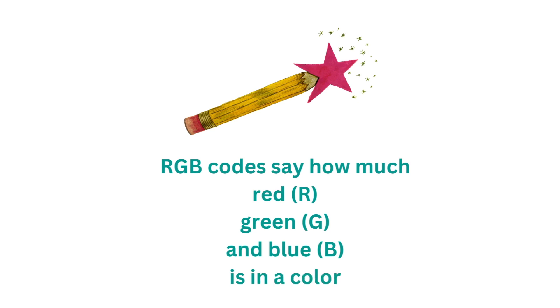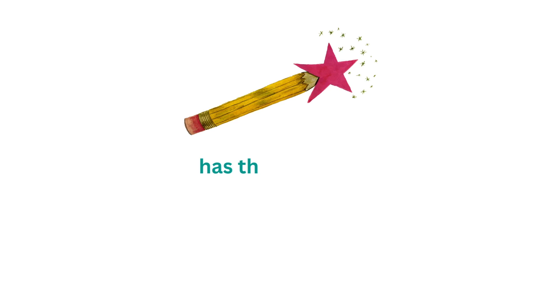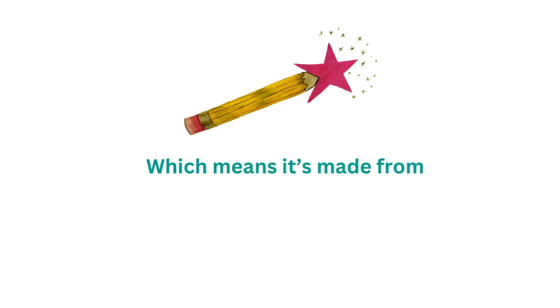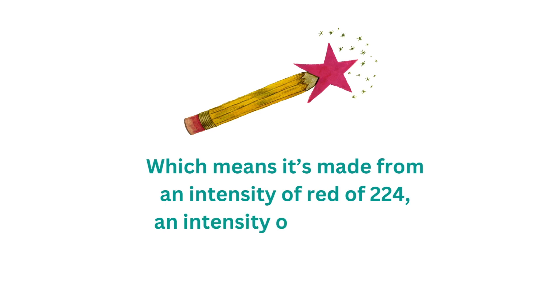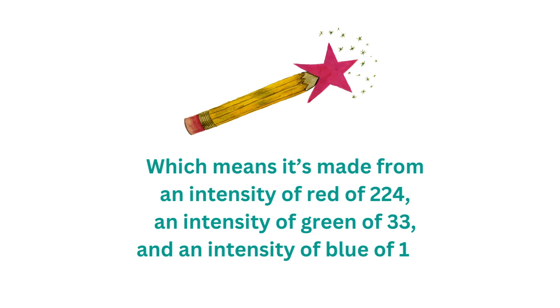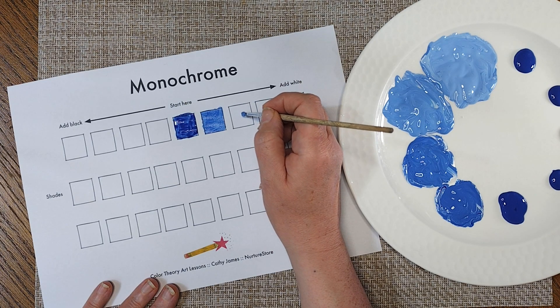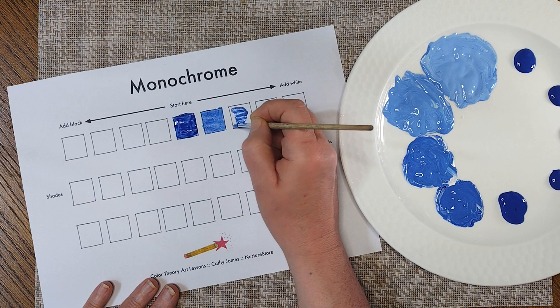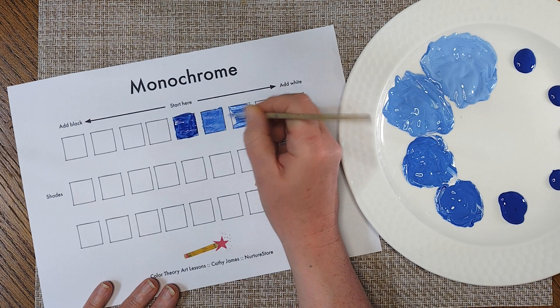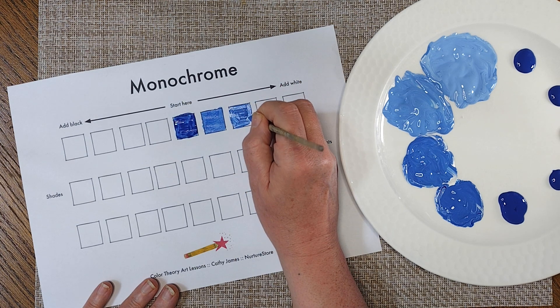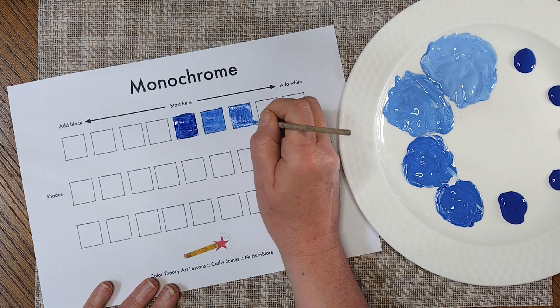RGB codes tell you how much red (the R), how much green (the G), and how much blue (the B) is in a colour — it's the recipe of how much red, green, and blue to mix to get the colour you want. For example, Barbie pink has the RGB code 224, 33, 138 — meaning it's made from a red intensity of 224, a green intensity of 33, and a blue intensity of 138. I'll put a link to a site that shows a huge range of colours and their names in the art colour theory pack.